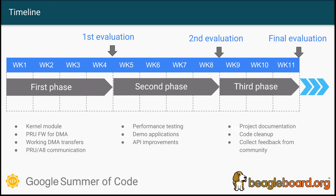For the timeline, I roughly divided tasks into three parts for each evaluation period. In the first weeks, I will prepare the kernel module and the PRU firmware that will realize the DMA transfers both ways. In the second part, I would like to do performance analysis and develop demo applications. In the last stage, I want to prepare documentation, clean up the code, and collect feedback from others.